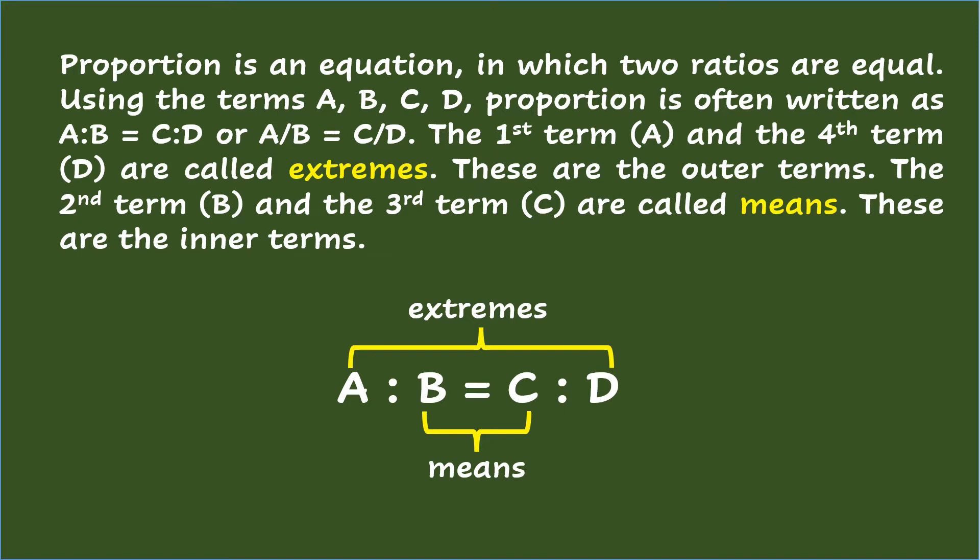The first term A and the fourth term D are called extremes — these are the outer terms. The second term B and the third term C are called means — these are the inner terms.